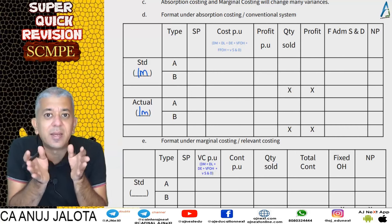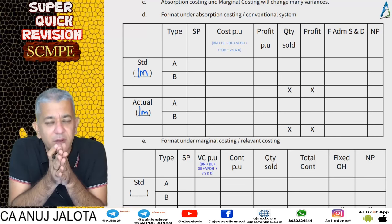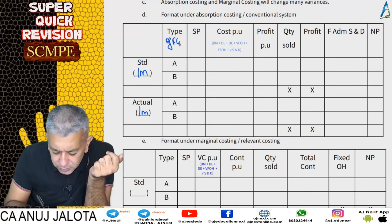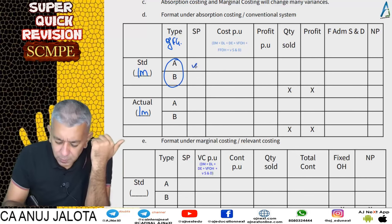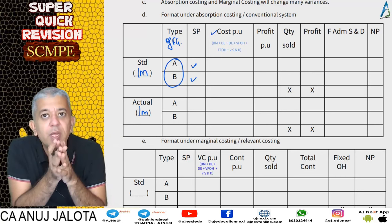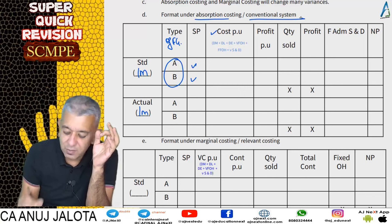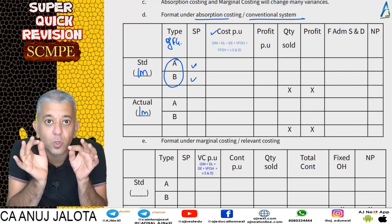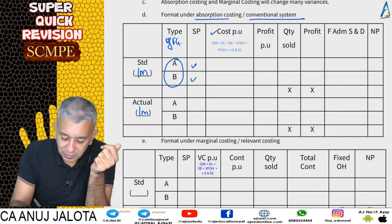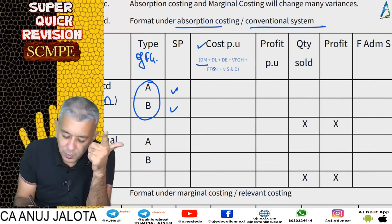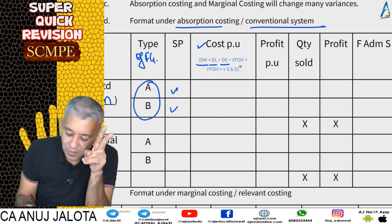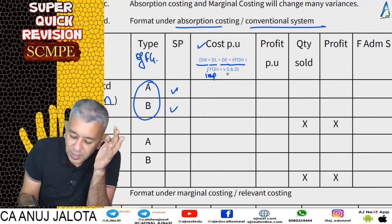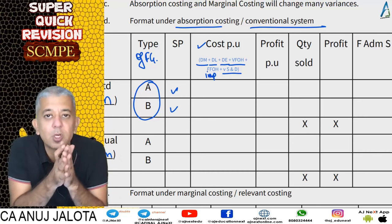If actual data is given for one year and standard data is given for one month, please multiply standard data by 12 and convert it to one year. For example, we sell two types of products — Product A and Product B. Under absorption costing, also called the conventional system, you put all costs per unit: direct material, direct labor, direct expenses, variable factory overheads, and fixed factory overheads.